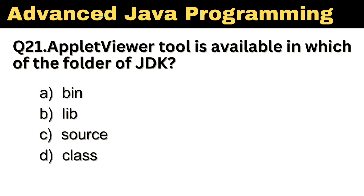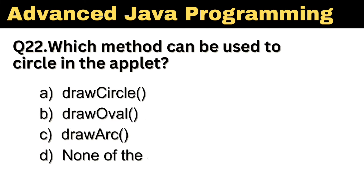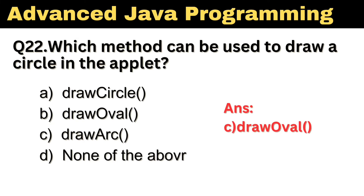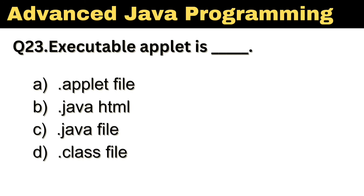Question No. 21: Applet viewer tool is available in which of the following folder of JDK? The right answer, Option A, Bin. Question No. 22: Which method can be used to draw a circle in the Applet? The right answer, Option B, DrawOval. Question No. 23: Executable Applet is dash. The right answer, Option D, .class file.